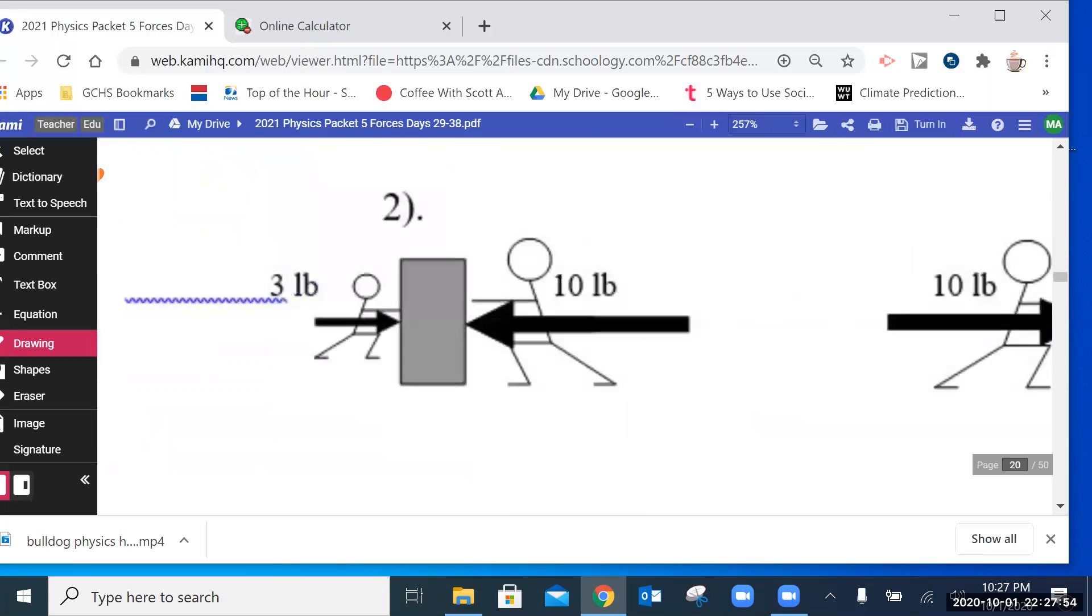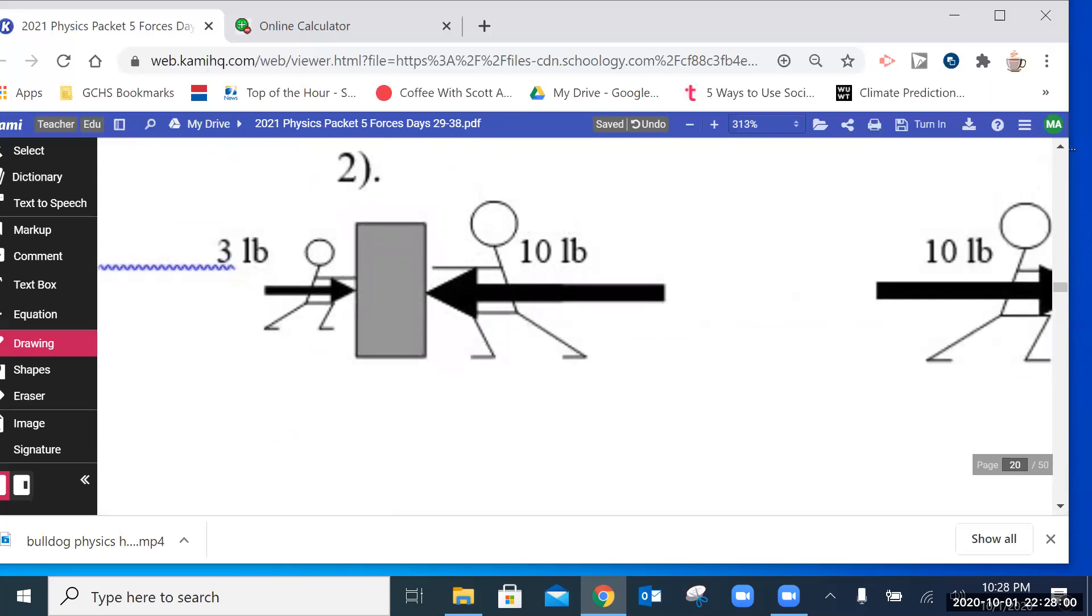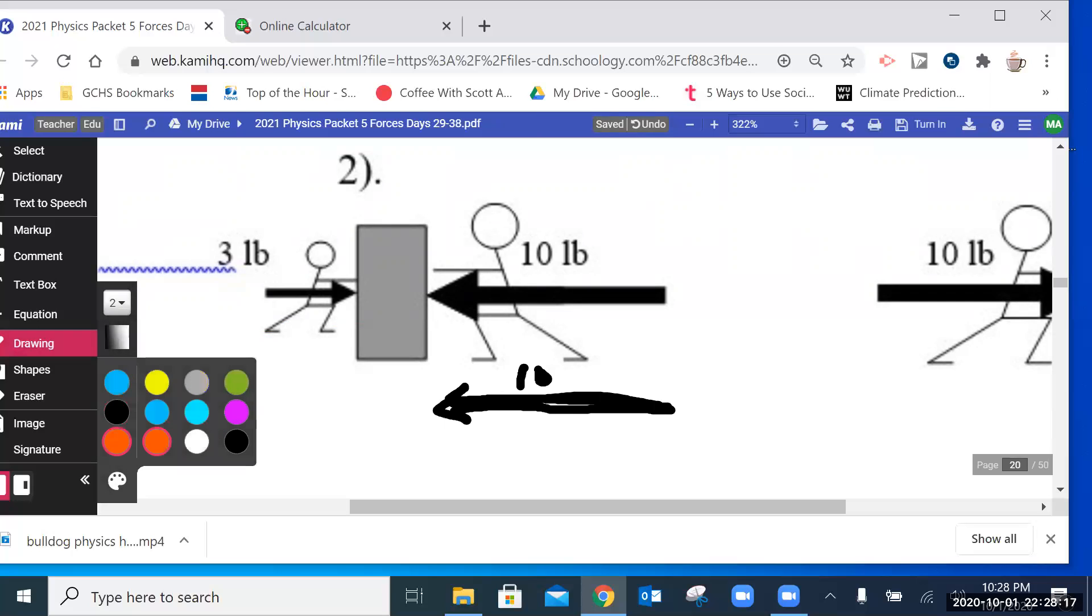Okay, next, number two. Three-pound force going to the right, 10-pound force going to the left. Doing this graphically. Again, we can draw the 10-pound vector with the same length in the same direction. And then, let's label that 10. And then I have the three-pound force. I'm going to draw it in a different location. But I'm going to draw it in the same size, in the same direction. And I'm going to draw the tail of that next to the head of the first vector.